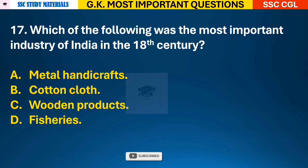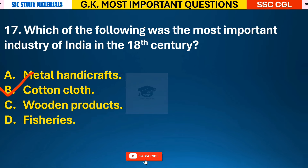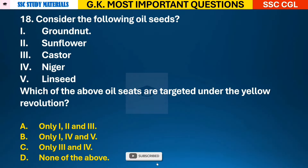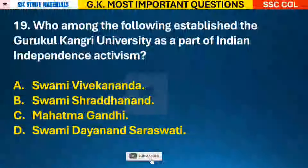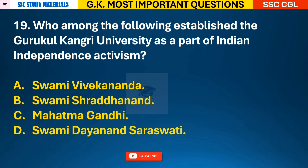Question 16: In which country does the local wind called Zonda blow? Answer D - it blows in Argentina. Question 17: Which of the following was the most important industry of India in the 18th century? Answer B - cotton cloth. Question 18: Which of the above oil seeds are targeted under the Yellow Revolution? Answer A - only groundnut, sunflower, and castor.